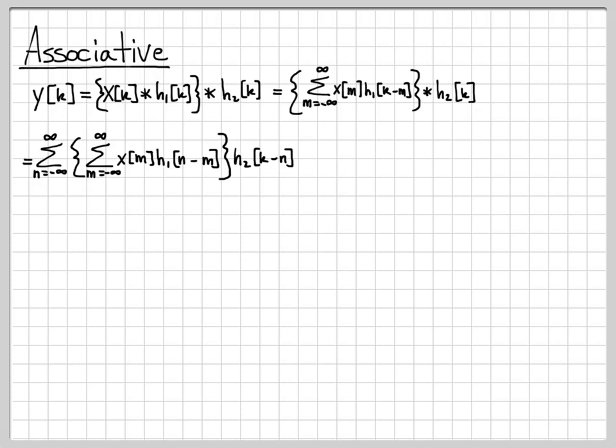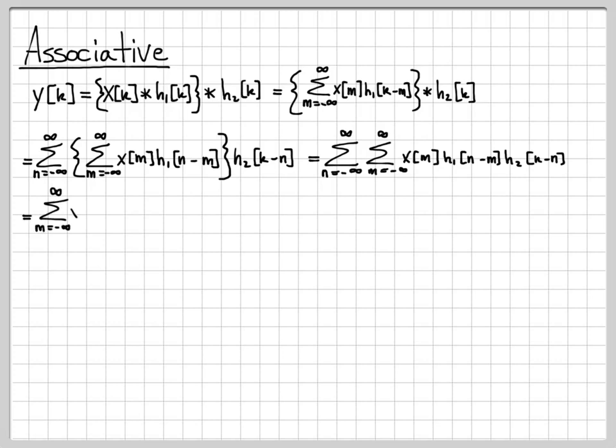We've replaced each star with the definition of discrete time convolution, so now we have two summations, each with a different counter variable. We have this infinite sum of an infinite sum, and since multiplication is associative and distributive, we can remove the parentheses to get a double summation over n and m. Changing the order of summation and factoring x of m — which is only a function of m — outside the sum over n, we have the sum over m times the sum over n.